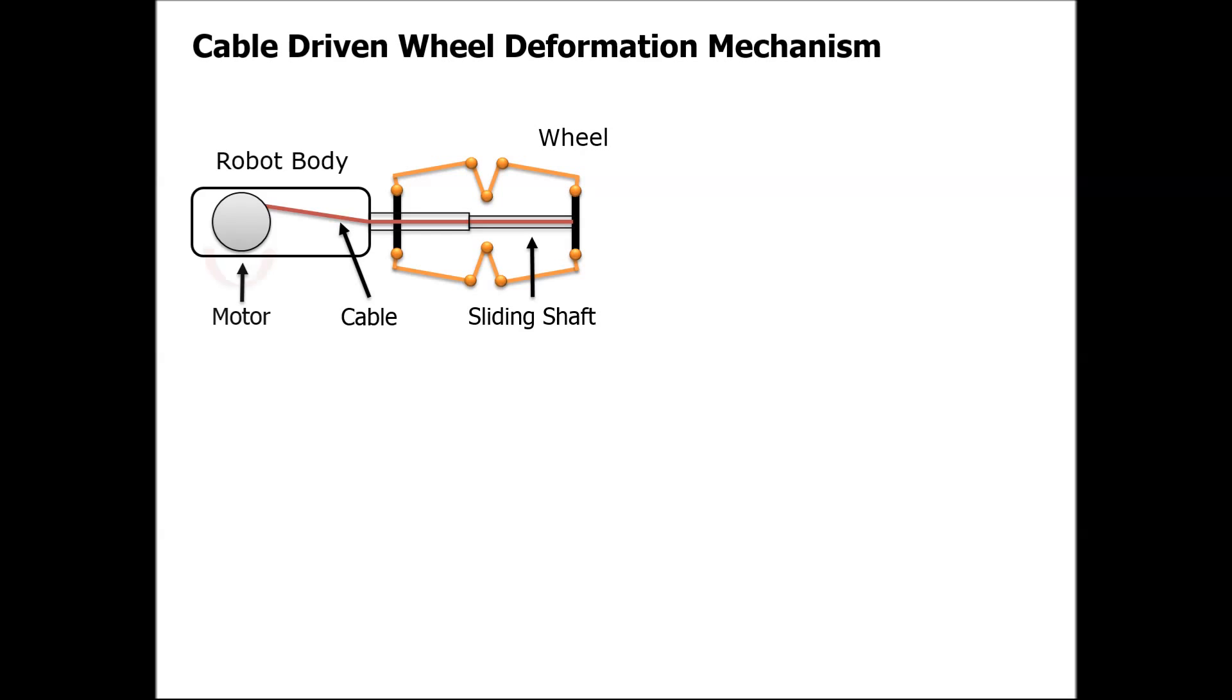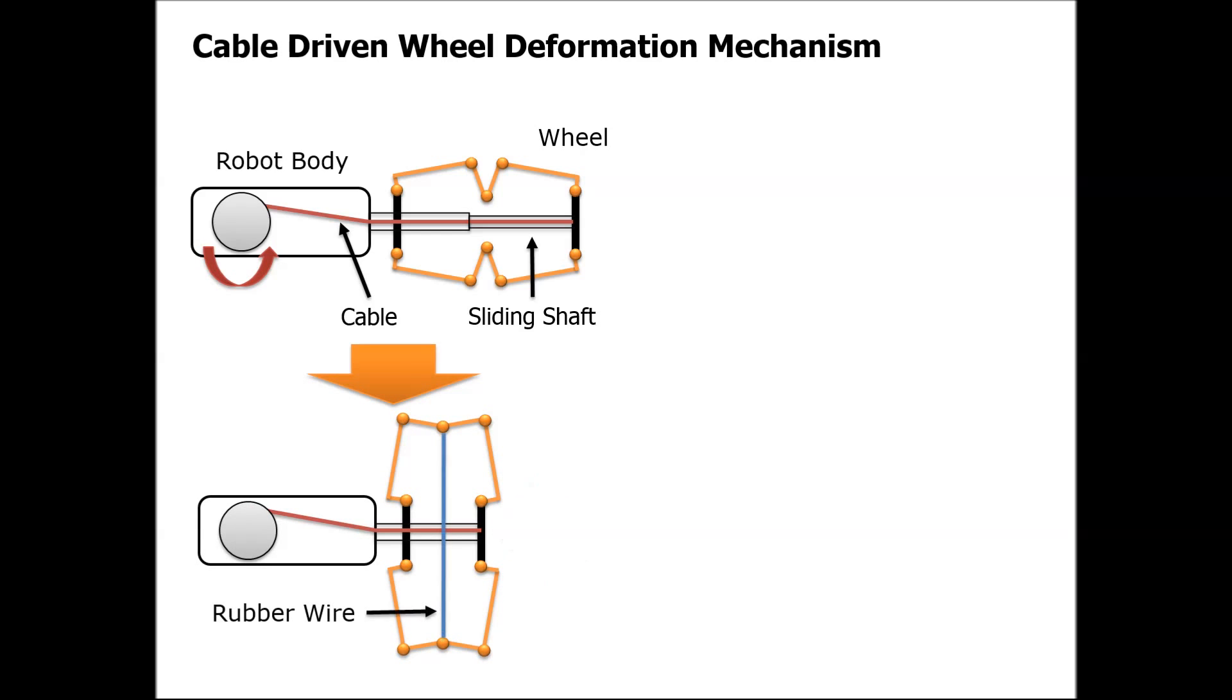When the motor pulls the wire, the wheel diameter becomes larger. And there's a rubber band around the wheel, so when the motor unwinds the wire, the wheel returns to the original shape.